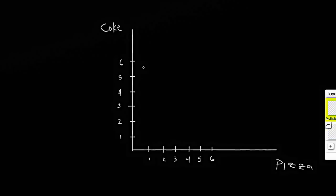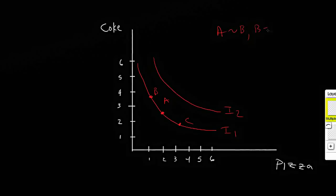But let's take a look at if I have multiple indifference curves here. I'll call this I1, I'll call this I2. Let's suppose that I have two bundles, let's suppose I have this bundle of coke and pizza that we'll call A, this bundle B, and this bundle C. Because A, B, and C are on the same indifference curve, then I know that A is indifferent to B, B is indifferent to C, and by the transitive property, A is indifferent to C.